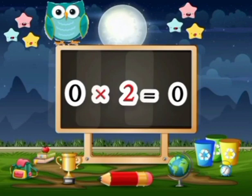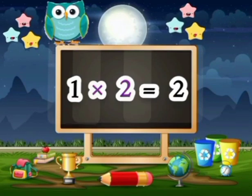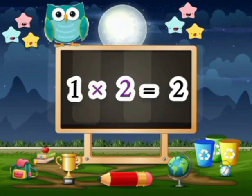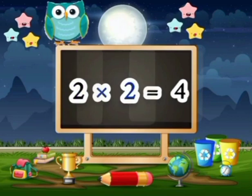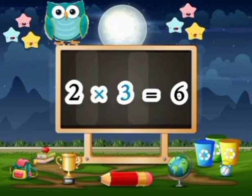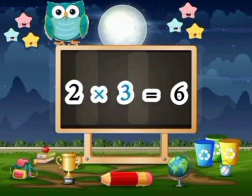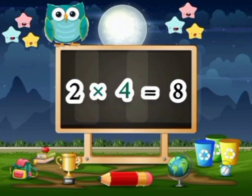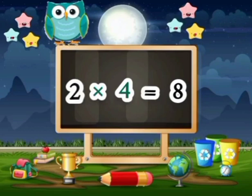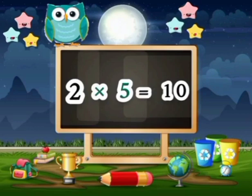0 times 2 is 0. 1 times 2 is 2. 2 times 2 is 4. 3 times 2 is 6. 4 times 2 is 8. 5 times 2 is 10.